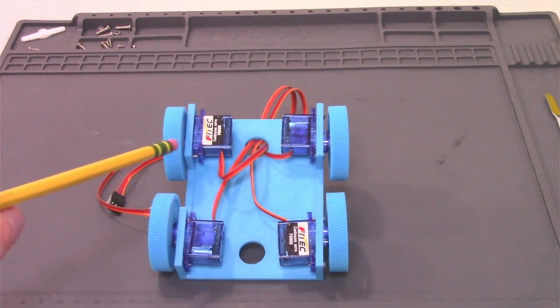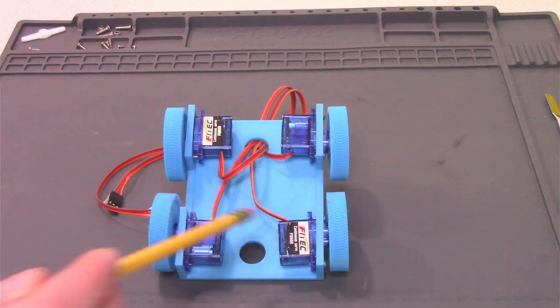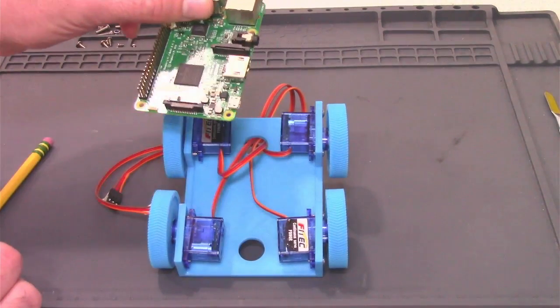Here you can see now that it's assembled. We've got the four servos connected to the body and all the wheels. For this project, I'm going to be using a Raspberry Pi.